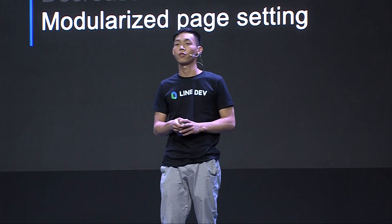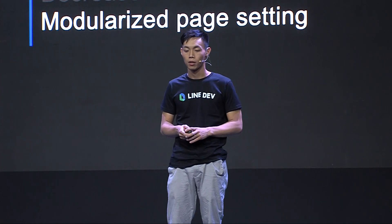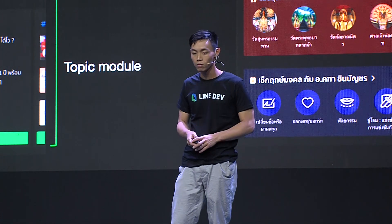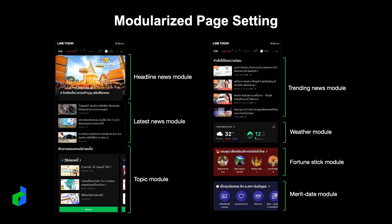Since the page was not configurable, there was no flexibility to decide what information to be displayed on each page. For this reason, we propose a new modularized page setting architecture. This is what the page looks like — as you can see, the page is composed of different modules. The top module is a headline-style news module where news is manually selected by our editor. The second module is the latest news module where news is automatically generated depending on user reading logs. Editors can put whatever module in any category in any order depending on different events or conditions.